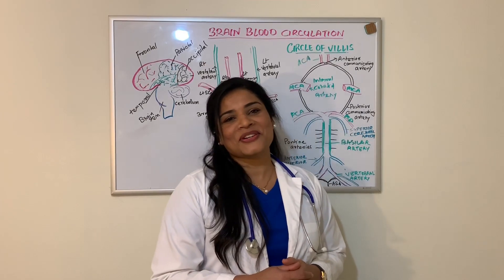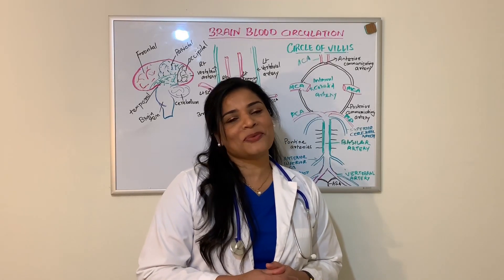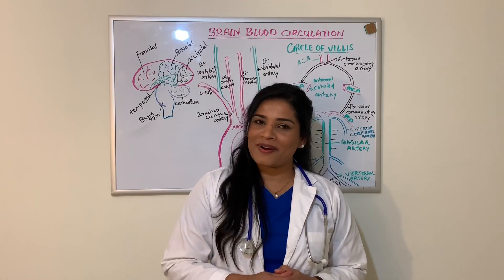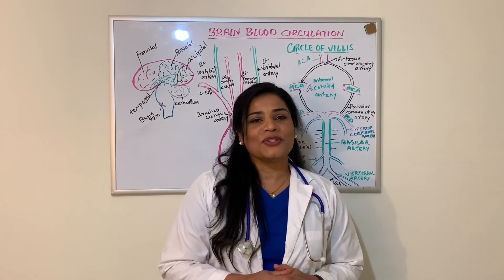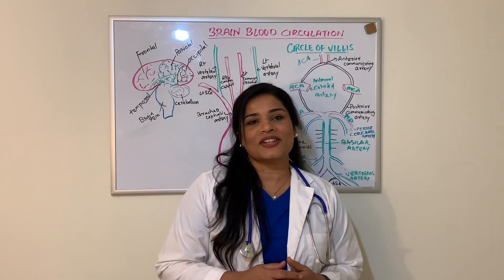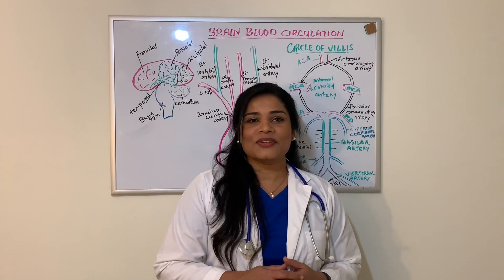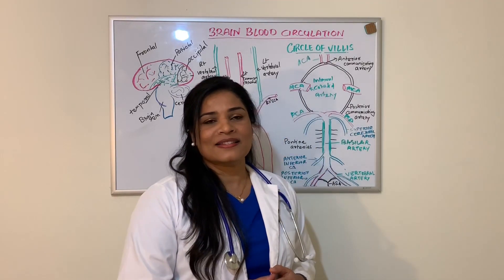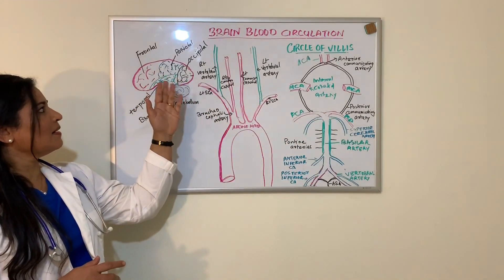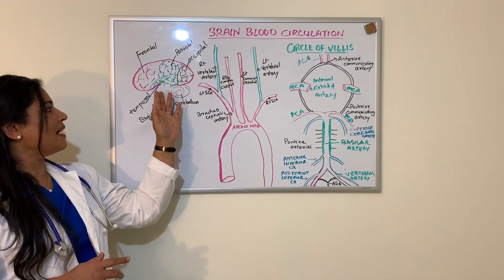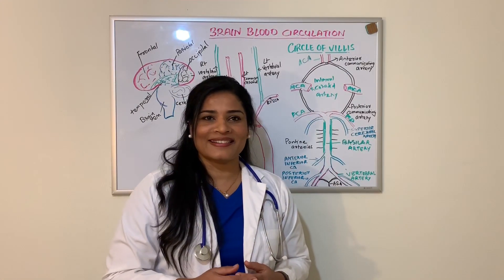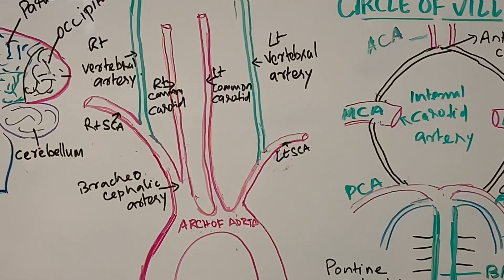Today we are going to talk about the blood circulation in the brain. The brain is a very complex organ in our body — in order to smile, think, or speak, we need proper functioning of our brain. As you all know, the brain has four lobes: the frontal, parietal, occipital, and temporal. Let's find out in detail about blood circulation in the brain.